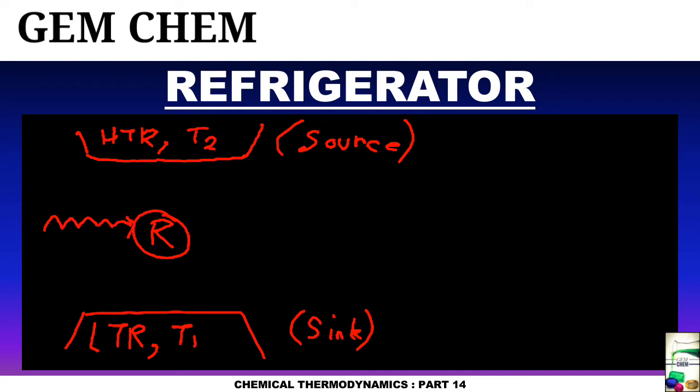In this case, it is going to take up the work - that is, W will be taken. First it will take up heat of Q1 from low temperature reservoir, and a work will be performed to dump up heat of Q2, which is equal to Q1 plus W.